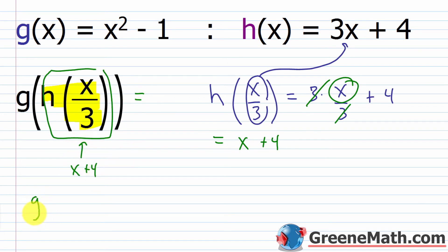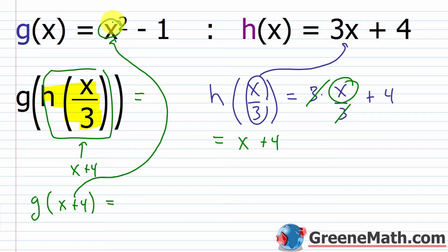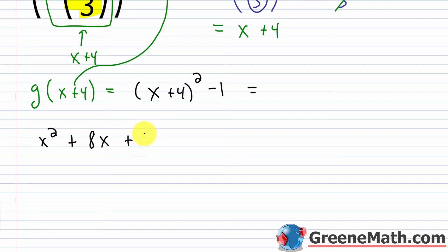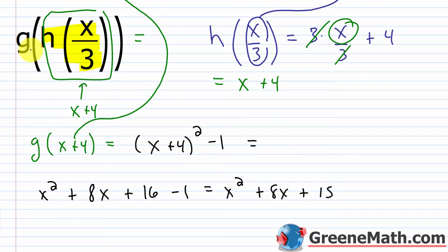So this becomes g of x plus 4. I'm taking x plus 4 and plugging it in for x in g of x. So I would have the quantity x plus 4 squared, then minus 1. Using the special products formula: x plus 4 squared equals x squared plus 2 times x times 4, which is 8x, plus 4 squared which is 16, then minus 1. So you get x squared plus 8x, and 16 minus 1 is 15. So g of h of x over 3 equals x squared plus 8x plus 15.